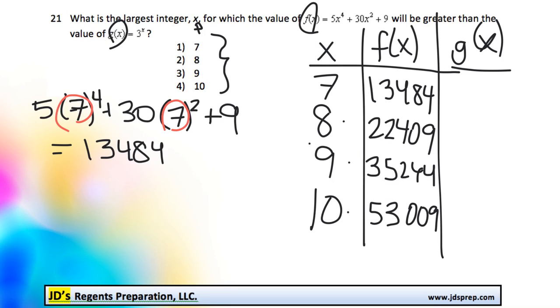Now, thankfully, calculating g(x) is a little bit faster. That's 3 to the power of x. So if x is 7, it would be 3 to the power of 7, which is 2,187. So that's going to go here.